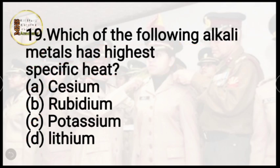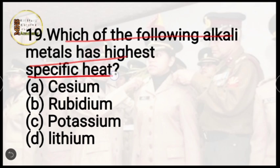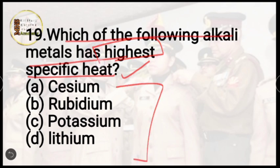Question 19: which of the following alkali metals has the highest specific heat? Specific heat is the heat property measuring temperature resistance of an object to heat flow. Options are cesium, rubidium, potassium, or lithium. The correct answer is option D, lithium.